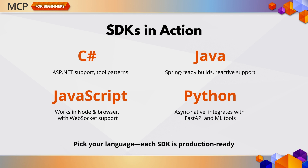The MCP SDK repositories come with sample implementations in your favorite language. In C Sharp, you'll see basic and advanced server setups, including ASP.NET integrations and tool patterns. In Java, you get Spring-ready builds with reactive programming and type-safe error handling. The JavaScript SDK supports both Node and the browser, with WebSocket streaming built in. As for Python, it's async-native, with FastAPI or Flask support, and integrates naturally with ML tools.